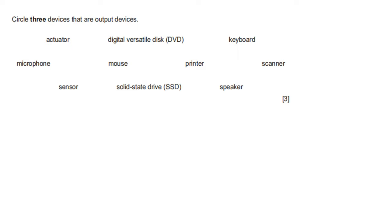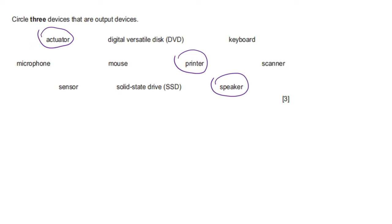Circle three devices that are output devices. Actuator — output device. DVD — not an output device. Keyboard — input. Microphone — input. Mouse — input. Printer — output device. Scanner — input. Sensor — input. SSD — storage device. Speaker — output device. The three output devices are actuator, printer, and speaker.